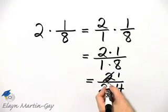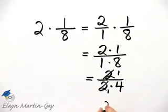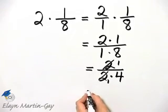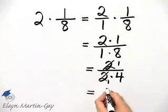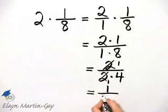2 divided by 2 is 1. Again, 2 divided by 2 is 1. So what do we have? We have 1 over 1 times 4, or 4. So the product is 1 fourth.